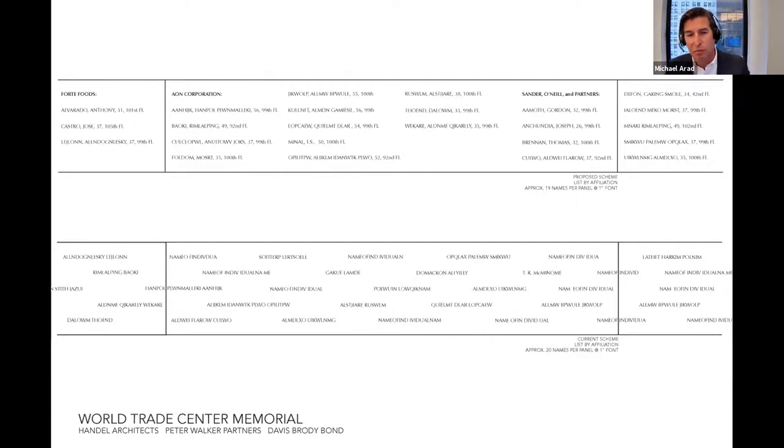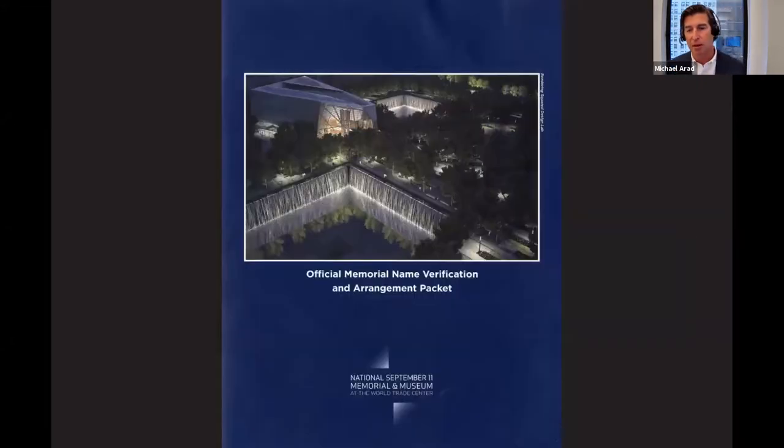And various family groups came together with a proposal which would list people on the memorial by the company that they worked for. The companies would be listed alphabetically as would be the people. It would include their age and the floor that they were on and any rank they might have if they were first responders working for the fire department or the police department or other responding agencies. I was not happy with this proposal because I felt that instead of focusing on both the individual and collective, it actually started to group people in a way that was antithetical to the spirit of the memorial. And so even if you look at it graphically, the idea of putting names in columns versus letting each name be an island onto itself changed how your reading might be.